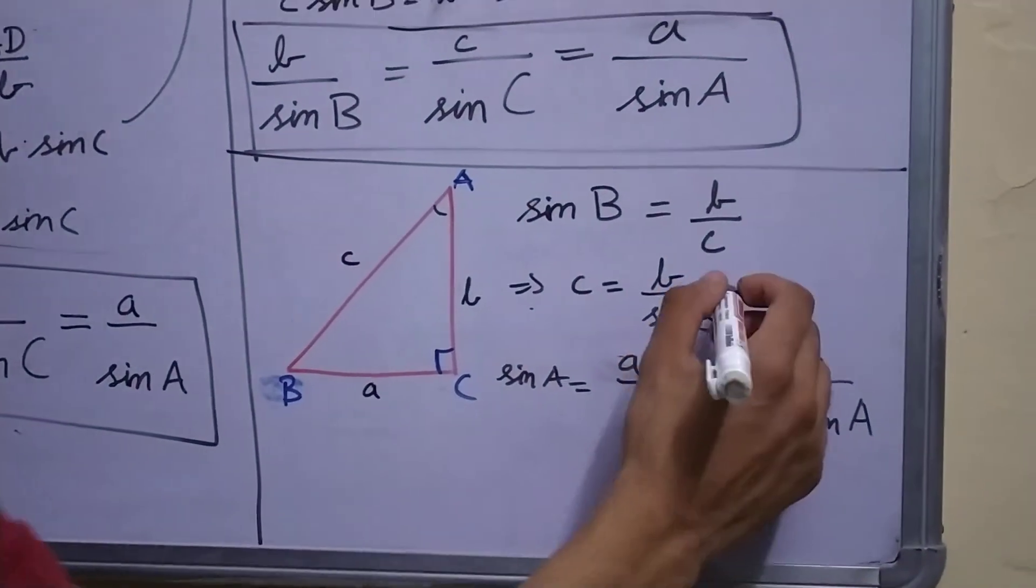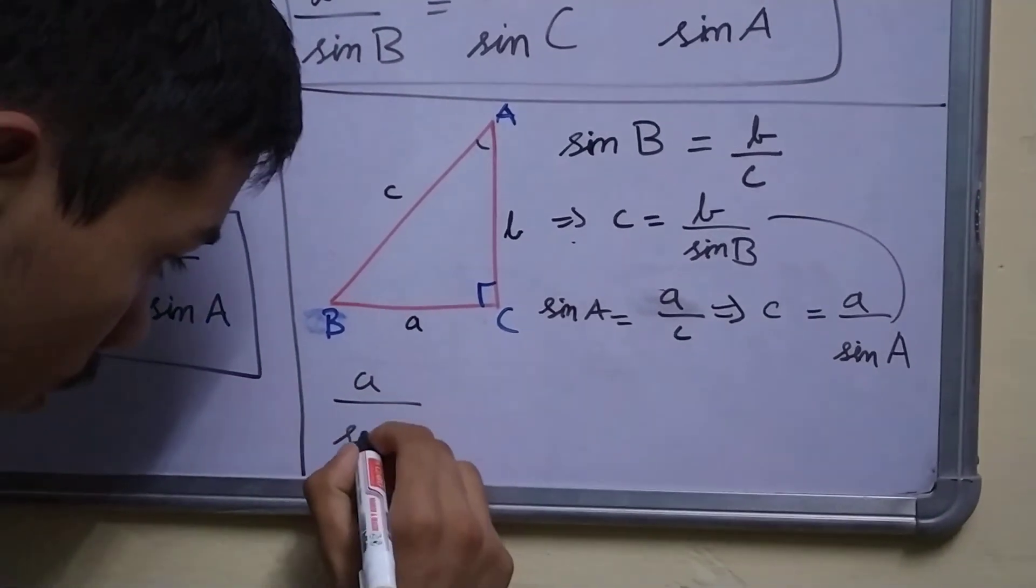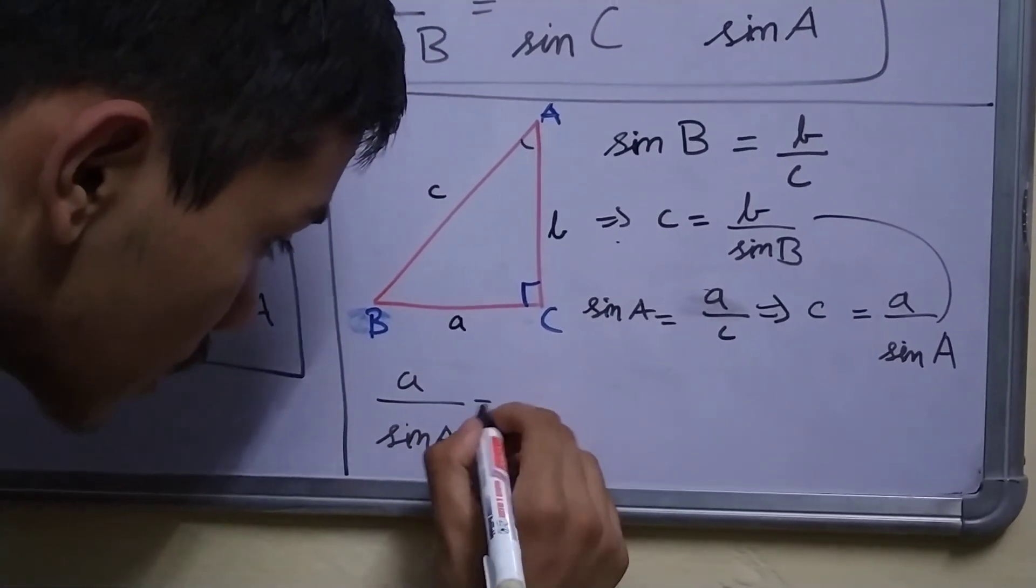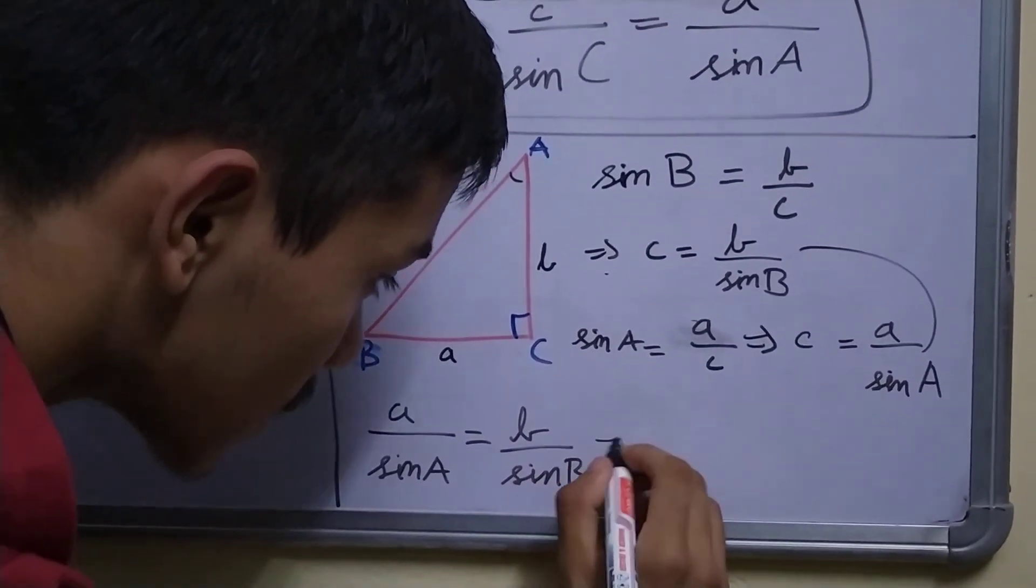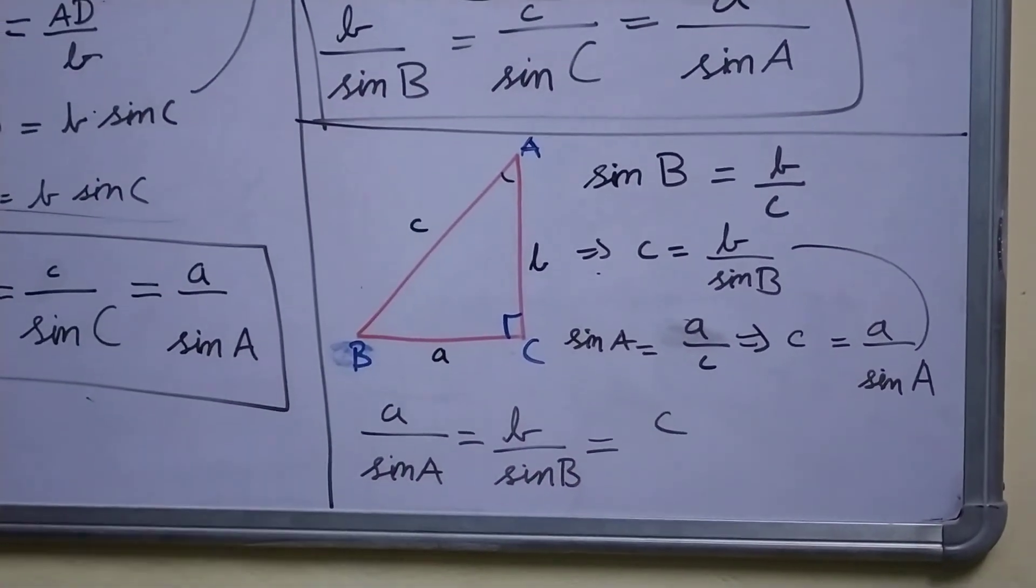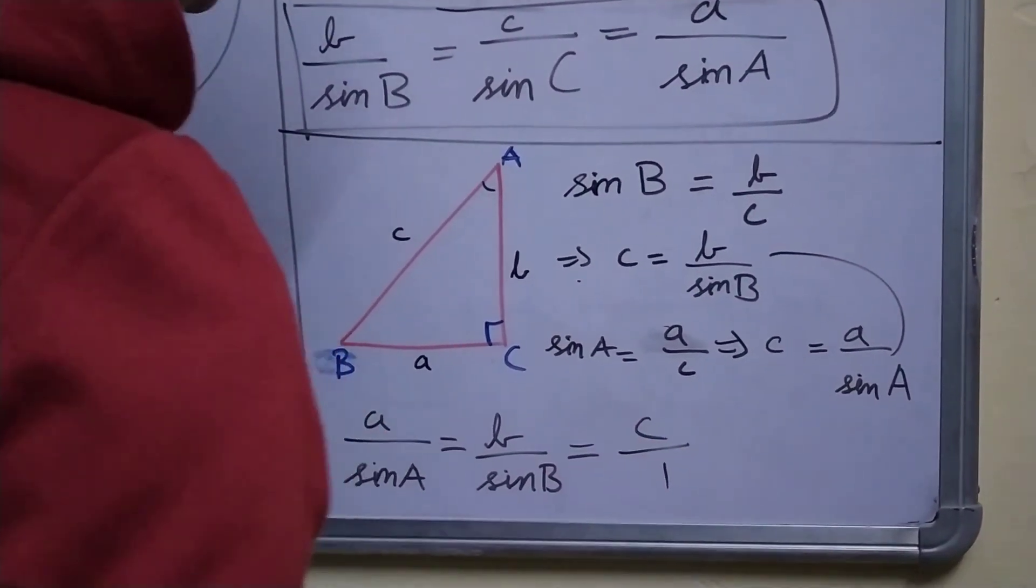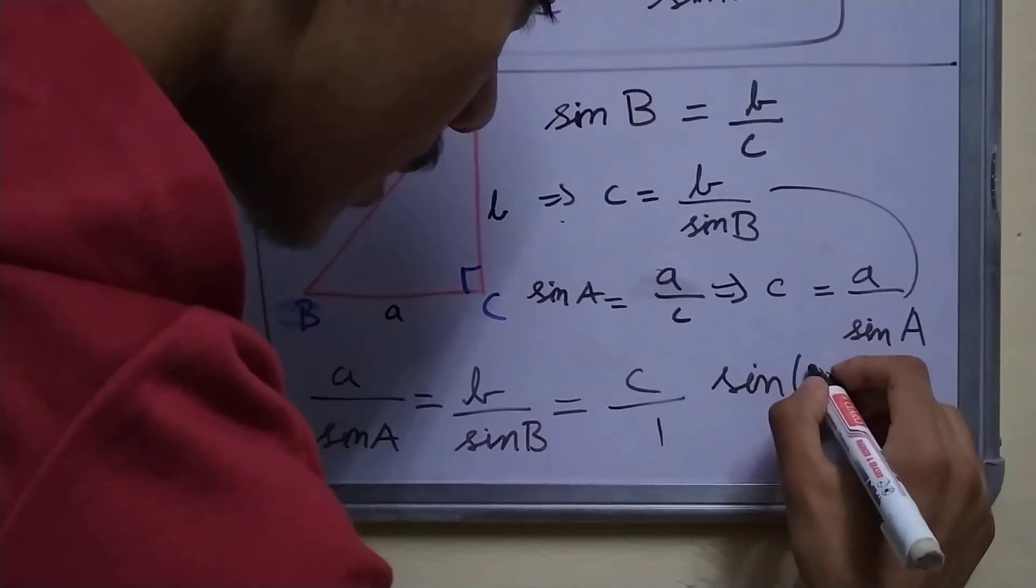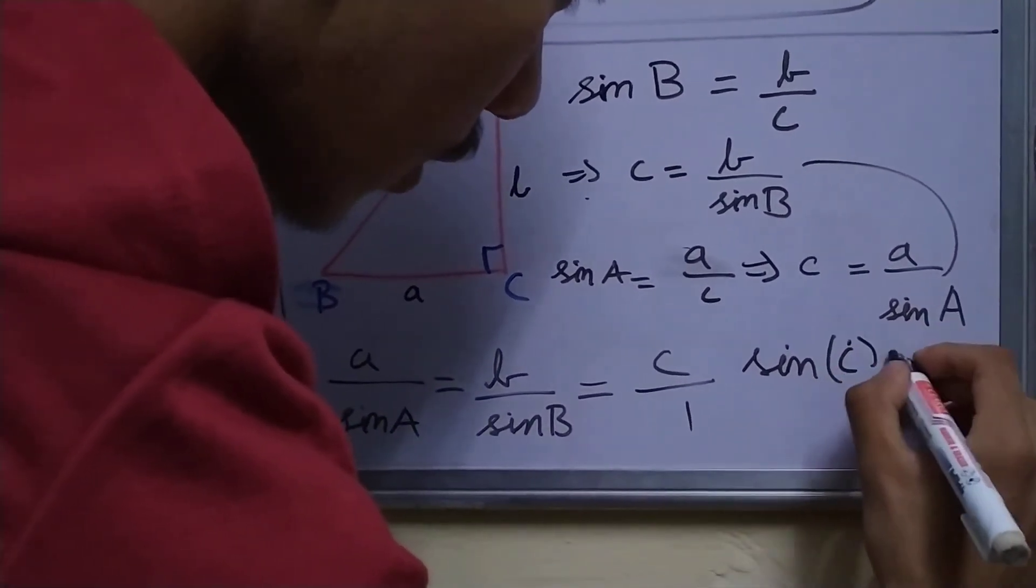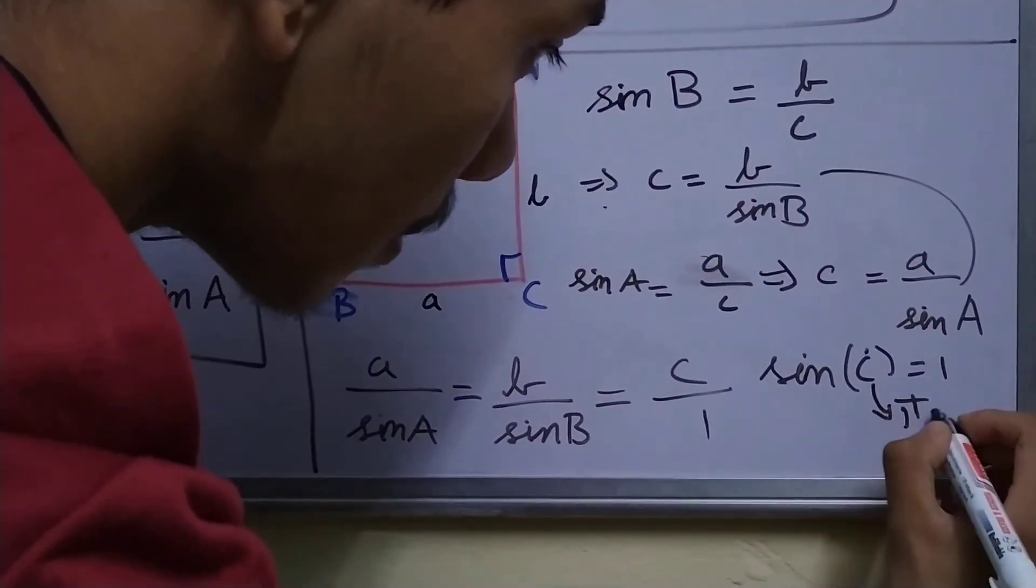Now, using these two, we can say that a upon sin A is equal to b upon sin B is equal to c. And c can be written as c upon 1.